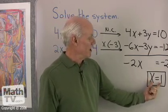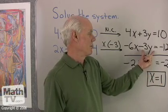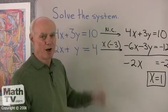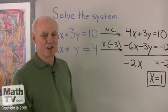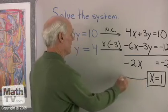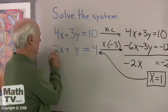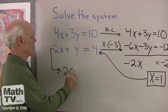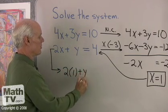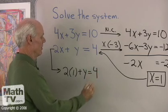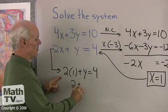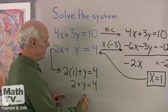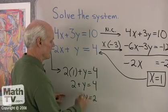To find the y-coordinate, I'm going to take this value of x and substitute it back in here, or here, or here, or here. Any one I want. It won't make any difference, I'll get the same result. So let's make it easy on ourselves and substitute it back into this equation right here, giving us 2 times 1 plus y is equal to 4. So that's 2 plus y is equal to 4. Add negative 2 to both sides, end up with y is equal to 2.